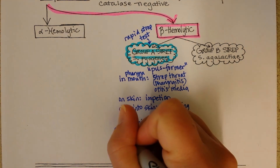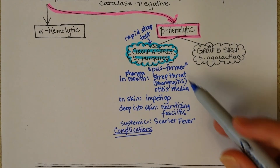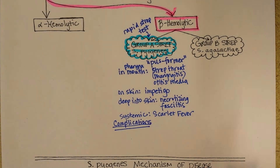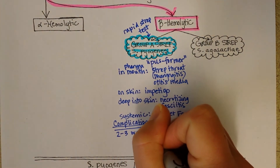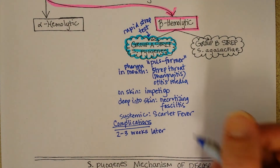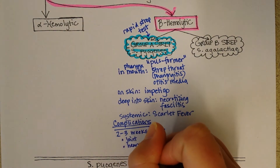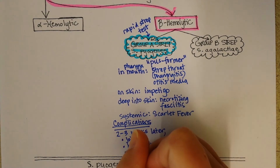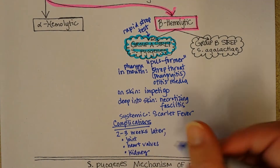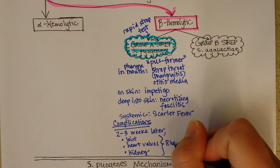What really makes it famous, in my opinion, is the rare set of complications that can occur if you get a Streptococcus pyogenes infection and then fight it off with your immune system and make antibodies. What can sometimes happen is about two to three weeks later, after someone thinks they've beaten the strep throat without antibiotics, they might develop joint problems, heart problems — specifically their heart valves — and sometimes kidney problems. These symptoms are referred to as rheumatic fever.